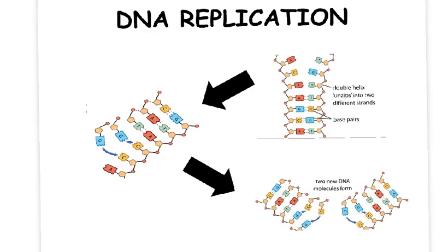DNA is a double-stranded molecule. The first stage in DNA replication is for the DNA molecule to unzip, forming two strands. This exposes the bases on each strand of DNA and allows new bases to line up against each strand. These bases align next to their complementary bases, forming base pairs. Once this process is complete, the two strands will have become two complete DNA molecules, and one chromosome has now become two identical copies.